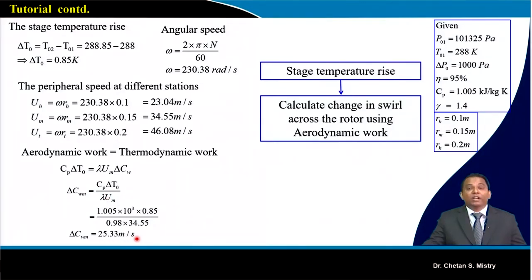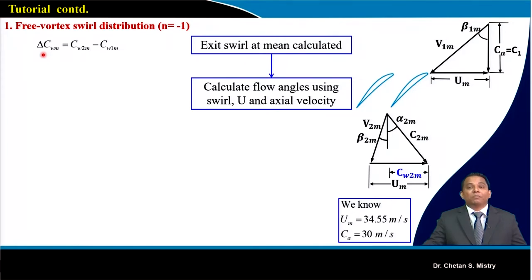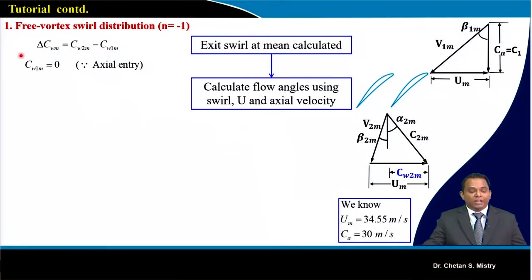We are asked to implement two design approaches. For the free vortex design, n = -1. Since entry is axial, Cw1 = 0, so delta-Cw = Cw2 - Cw1 means Cw2 at mid station equals 25.33 m/s. Always plot the velocity triangle to understand and calculate the various angles and velocity components. The inlet and outlet velocity triangles for the rotor are used to extract all required flow angles.